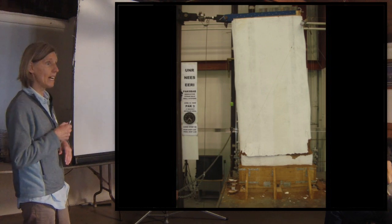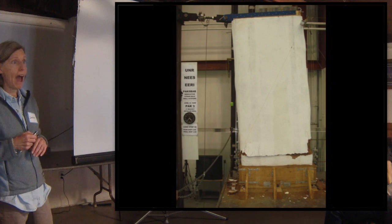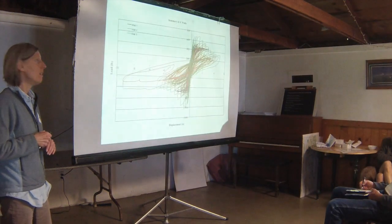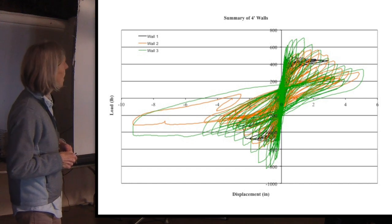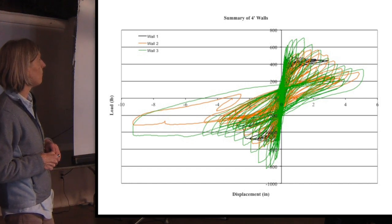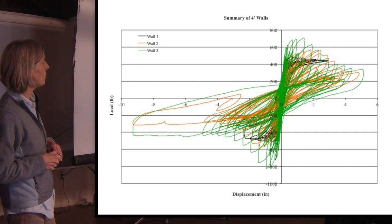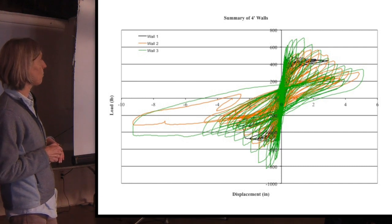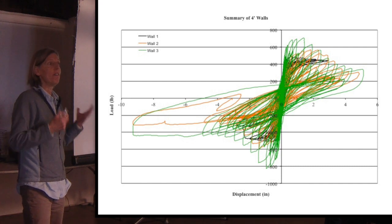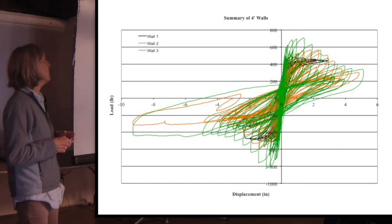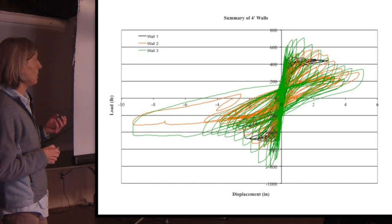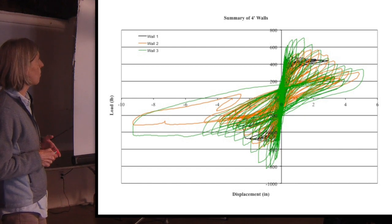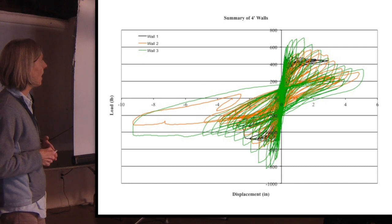We came up with some graphs of force versus displacement. Three of the walls, the three walls that were four feet long, are on this graph. The first wall is here in black, the second is in orange, and the third is in green. These graphs show the energy of the wall that is used up during the test. If you actually draw an outline to this graph, you would get the stiffness.